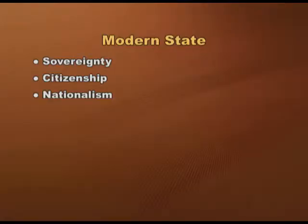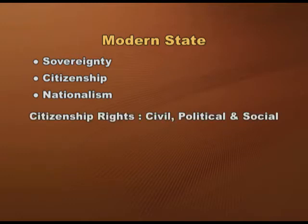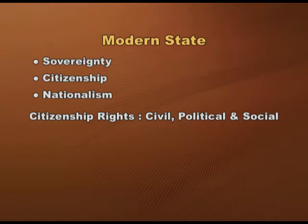The second defining feature of the modern state is citizenship rights, which include civil rights, political rights, and social rights. Civil rights include the freedom to live where we choose, freedom of speech and religion, the right to own property, and the right to equal justice before law. Political rights are the right to participate in elections and stand for public office. In many countries, governments were initially reluctant to admit universal franchise — even men were excluded if they did not own a certain amount of property.